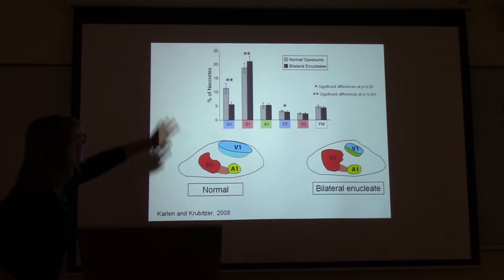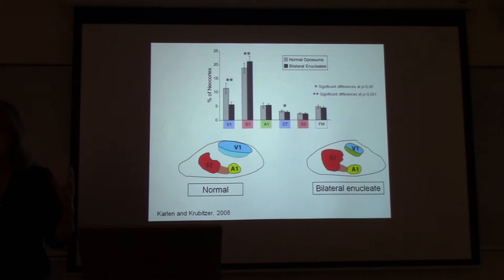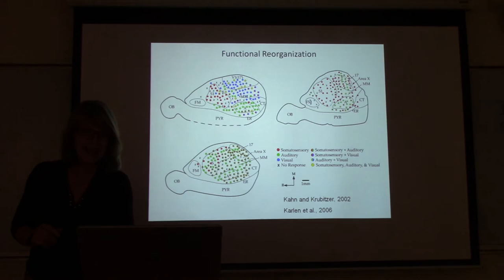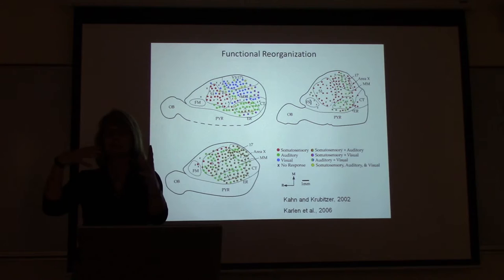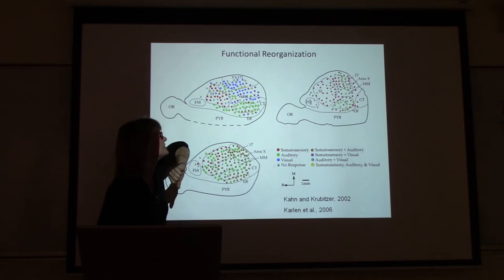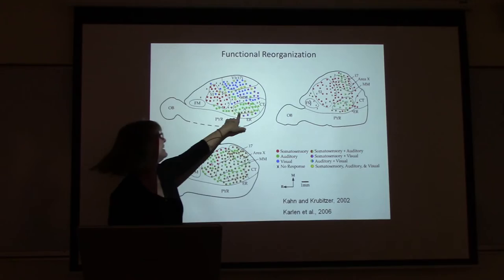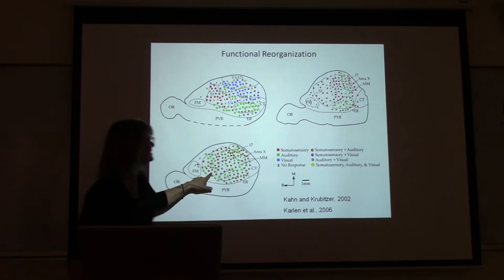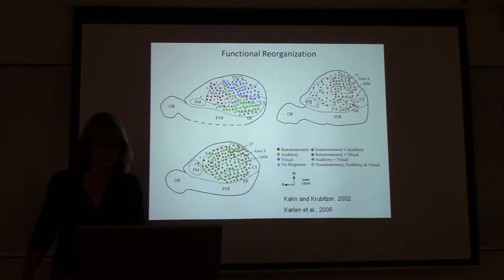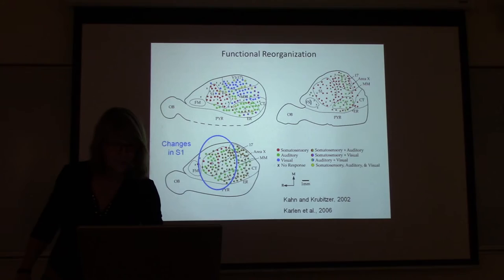Here's what we found. In the normal animal versus the bilaterally enucleated animal, we can still architectonically identify V1 — but it's a lot smaller. S1 has gotten bigger, V1 has gotten smaller, and the overall size of the cortical sheet hasn't changed — we've changed the size of cortical fields. When we map every electrode penetration — where blue indicates visual, red somatosensory, and green auditory responses — in the normal animal each cortex responds to its appropriate modality. In the bilaterally enucleated animals, all of what would normally be visual cortex is completely taken over by the somatosensory and auditory systems.